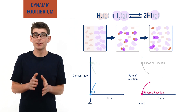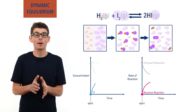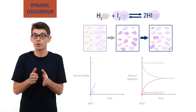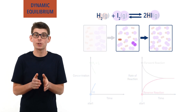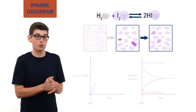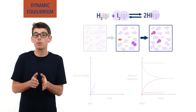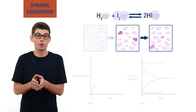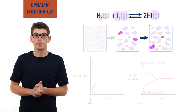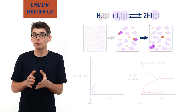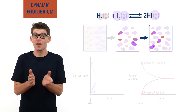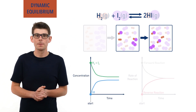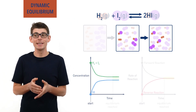Eventually, there will come a point where the rates of both become the same. In the time it takes for one mole of hydrogen and iodine to react and form two moles of hydrogen iodide, two moles of hydrogen iodide will also react and form one mole of hydrogen and one mole of iodine. Once this point is reached, the concentrations of everything in the mixture no longer change. This is dynamic equilibrium.